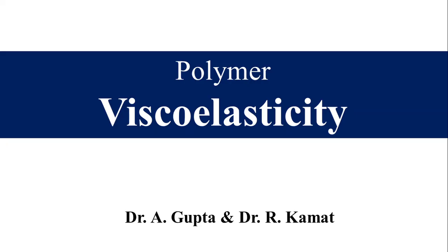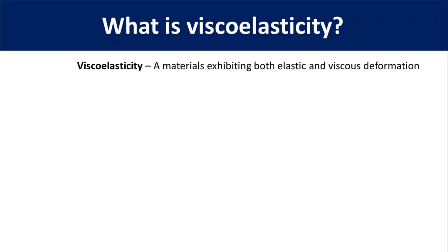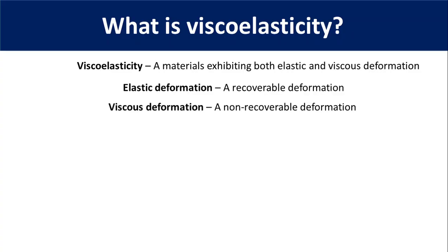So let's first discuss what is viscoelasticity. Viscoelasticity is a type of deformation which consists of both elastic and viscous deformation. Elastic deformation is a recoverable deformation, which means the material can return to its original shape once the applied force is removed. Whereas viscous deformation is a non-recoverable deformation, which means applied force leads to a permanent deformation. An example of elastic deformation is stretching of rubber bands, and an example of viscous deformation is flow of fluids like water or honey.